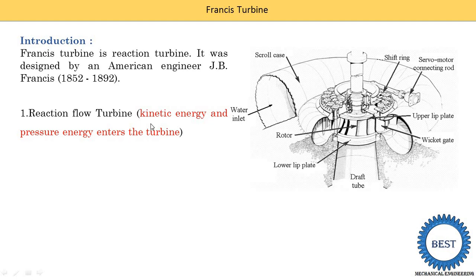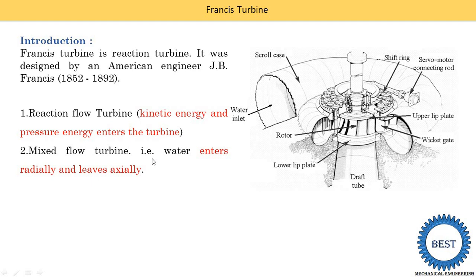Reaction means kinetic energy and pressure energy both enter the turbine. When water inlets into this turbine, it has two types of energy: kinetic energy and pressure energy. Second point: it is a mixed flow turbine. Mixed flow means water enters radially and leaves axially. On the runner, water enters in a radial direction and exits parallel to the shaft axis — leaving axially.